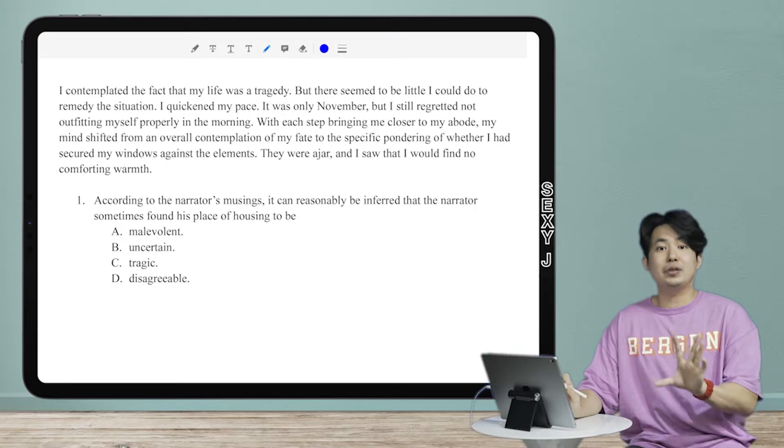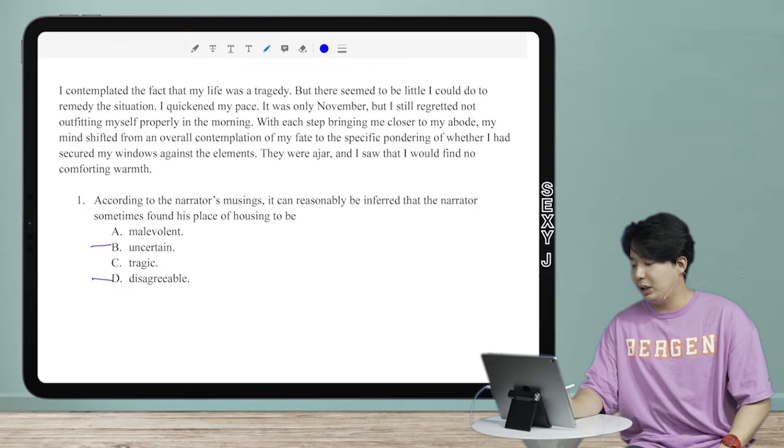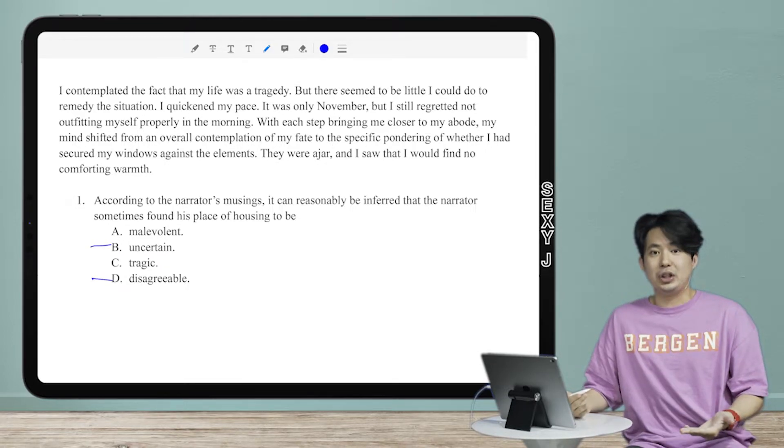From that, you don't even have to read any of this stuff. You can already know, probability-wise, the answer is probably going to be B or D here. Why? Because those are the weakest answers.